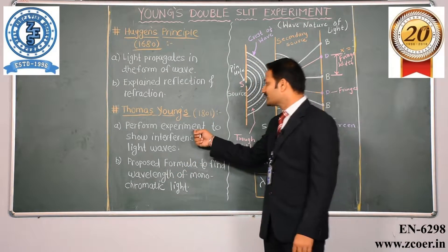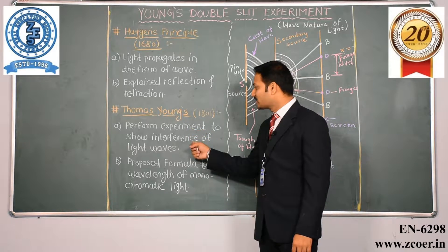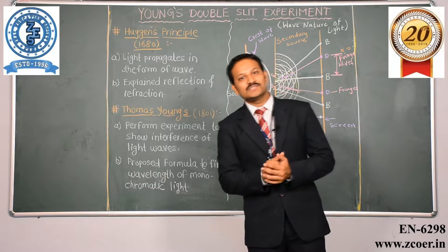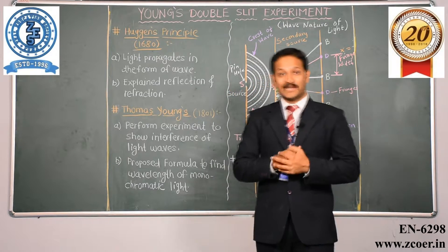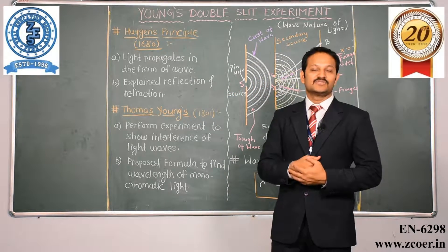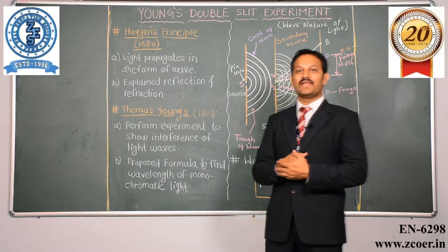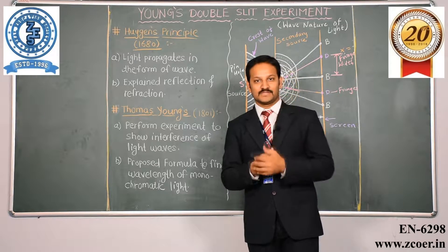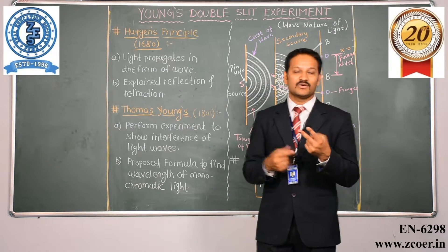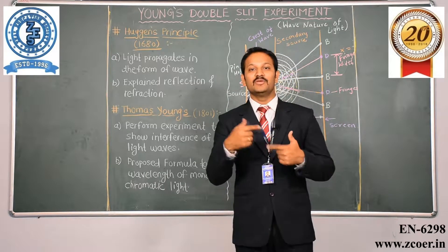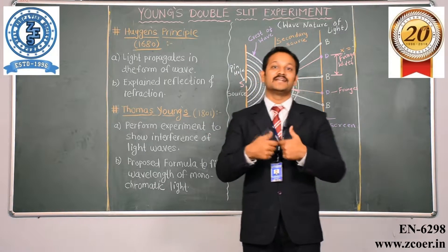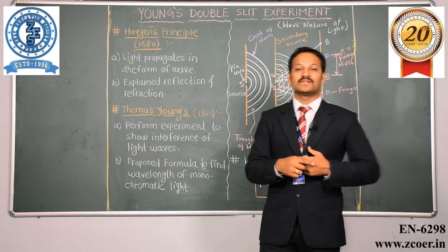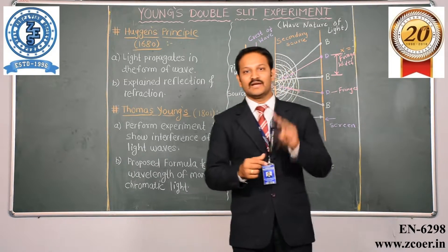Now, while performing the experiment, he explained the interference of light. What is interference of light, and what are the types of interference of light? Interference of light is only possible when there are two waves. When two waves cross each other, then we may say that both the waves interfere with each other. In this particular type of interference of light, we have two types.